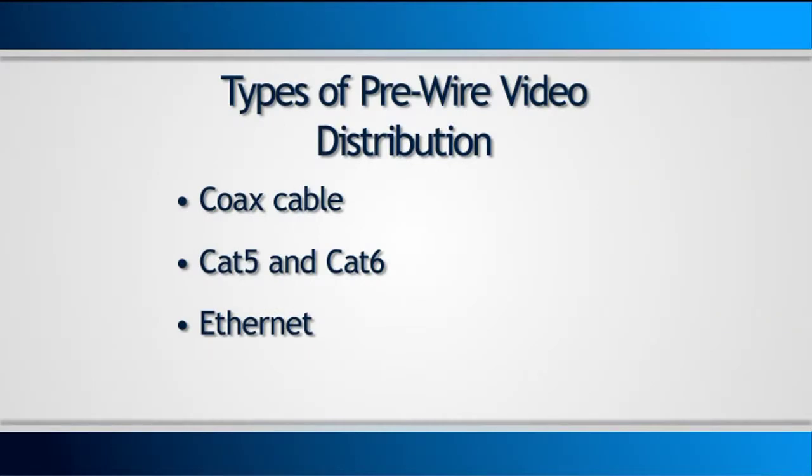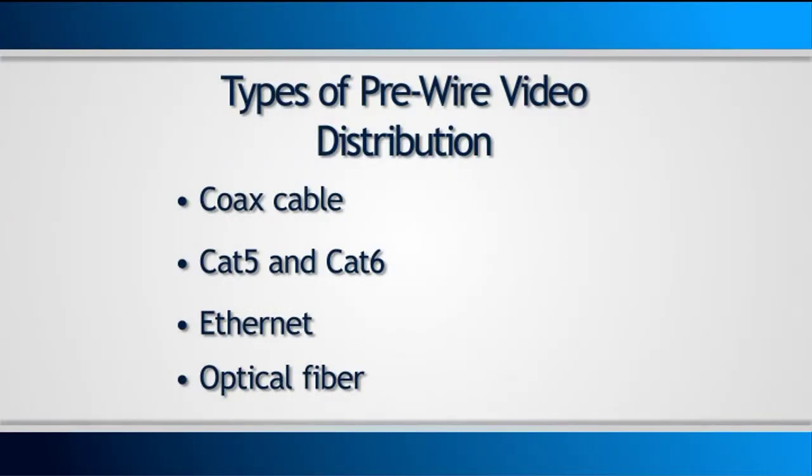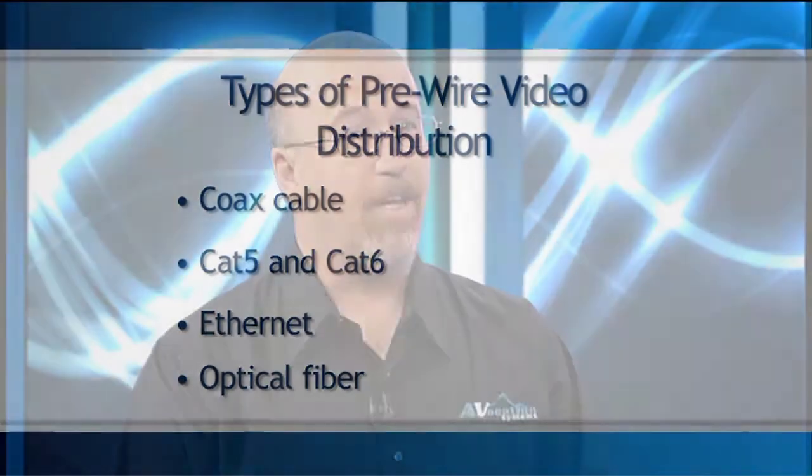Then you have Ethernet, which is fairly inexpensive on the cable side. It's easy to terminate. The price for the transceivers are moderate to high, and they usually compress the video signal in order to get it to go through Ethernet. Then you have optical fiber, which is moderately inexpensive. It's easy to terminate. The cost is moderate to high for the transceivers, but it will allow you to transmit full uncompressed 3D video through it with audio as well as control.